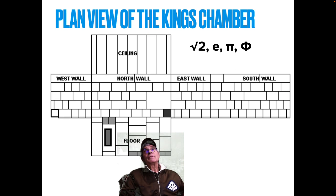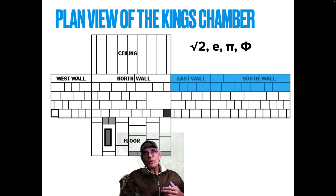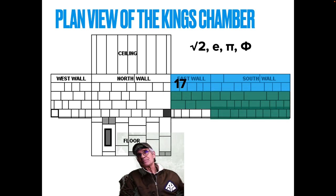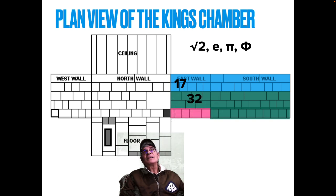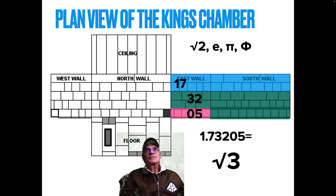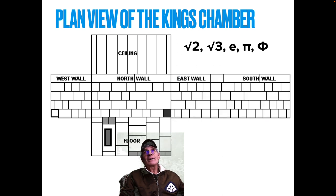We've seen square root of 2, Euler, pi, and phi — what else is here? Take the top courses of the east and south wall: 17 blocks. Then most of the third, fourth, and fifth courses of the east and south wall: 32. And then 1, 2, 3, 4, 5 at the bottom of the east wall. So you've got 1.73205 — that's the square root of 3. The constants are adding up: square root of 2, square root of 3, Euler, pi, phi.